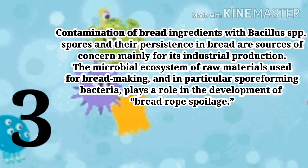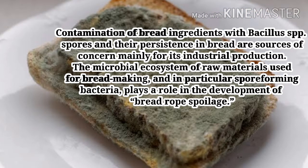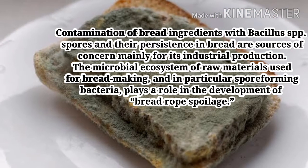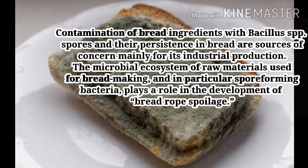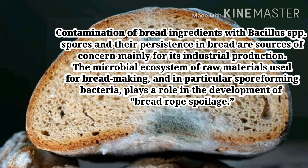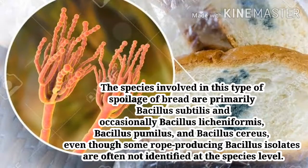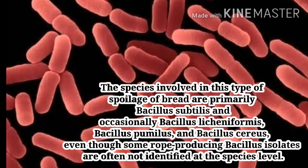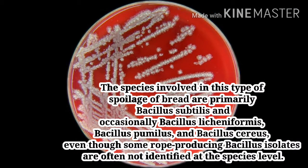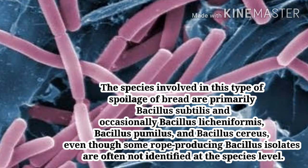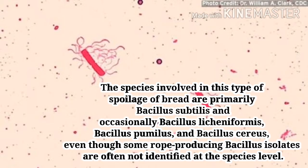Contamination of bread ingredients with Bacillus SPP spores and their persistence in bread are sources of concern mainly for industrial production. The microbial ecosystem of raw materials used for bread making, and in particular spore-forming bacteria, plays a role in the development of bread rope spoilage. The species involved are primarily Bacillus subtilis and occasionally Bacillus licheniformis, Bacillus pumilus, and Bacillus cereus.